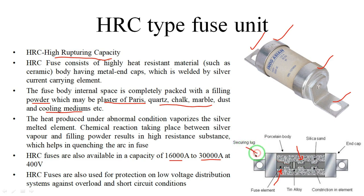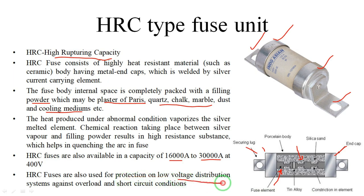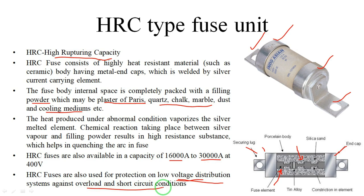The HRC fuse has securing lugs, a front cap, and an end cap. The current capacity is 16,000 to 30,000 amperes. These fuses are used for protection on low-voltage distribution systems. Because of their high current capacity, they are used in distribution systems and help protect from power overload and short circuit conditions.